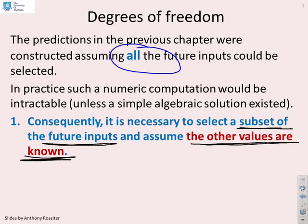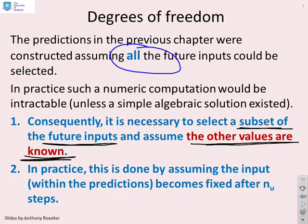So, what do we do? It's necessary to select a subset of the future inputs and assume that the other values, the other future inputs, are known, and this gives you a more practical or pragmatic performance optimisation. In practice, the way we do this is we assume that the input signal becomes fixed after NU steps.